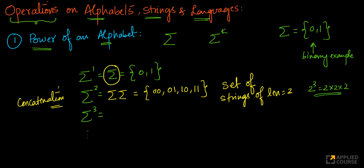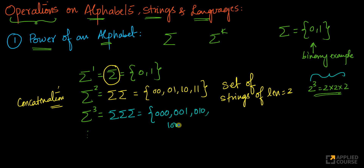Similarly, sigma cube means sigma concatenated 3 times. The concept of multiplication in numbers becomes concatenation for alphabets. Sigma cube gives all strings of length 3: 000, 001, 010, 011, 100, 101, 110, 111 — there should be 8, which is 2 power 3 possibilities. So these are all the 8 possibilities in sigma cube.